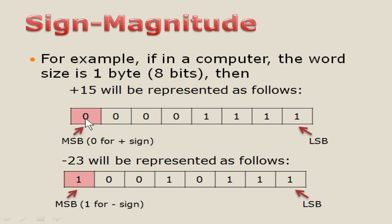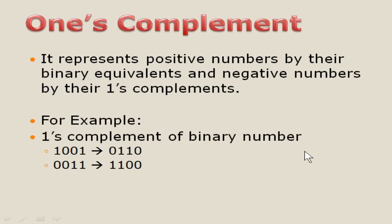So with these values, the sign bit is represented as the MSB. If it is a 16-bit number, you will have 15 bits as magnitude and the MSB — that is 1 bit — will be the sign bit. It goes on for all ranges. Now we will go to the second one, that is one's complement.